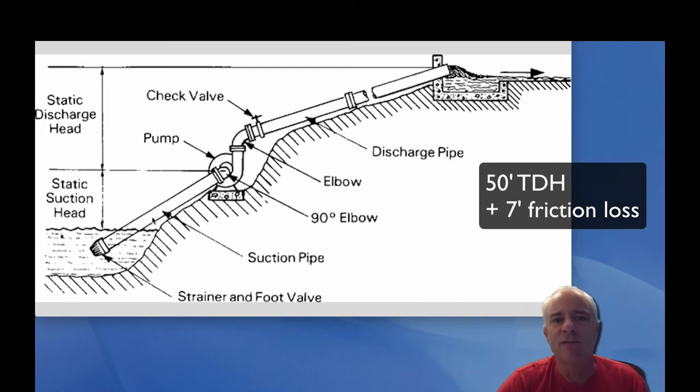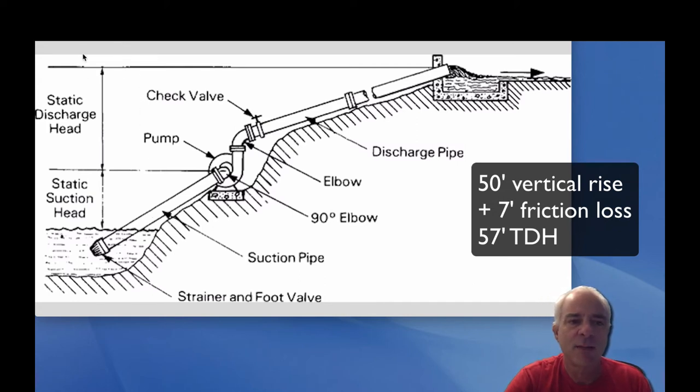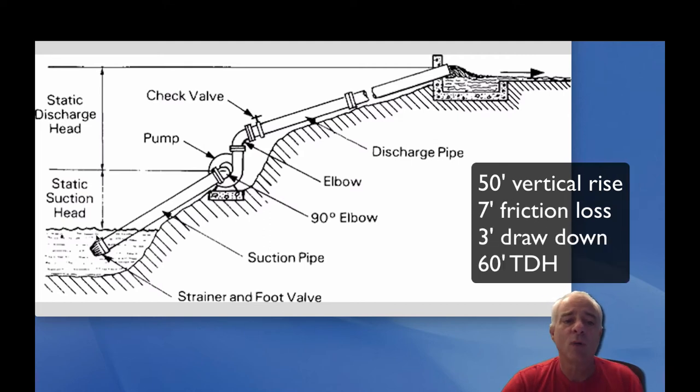So we have 57 feet now of total dynamic head. We also need to know while we're pumping, does this water level go down? This is very significant for submersible pumps in a well. Let's say we know this reservoir draws down about three feet. We want our pump to be able to pump when it gets down that low, so we add three more feet. Now we have 60 feet of total dynamic head.